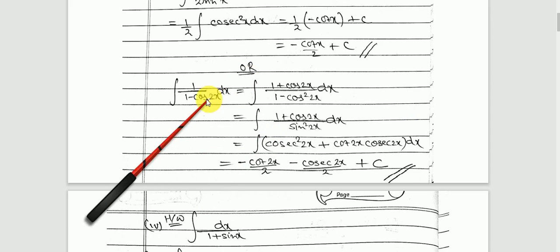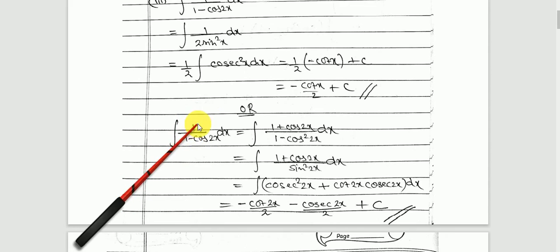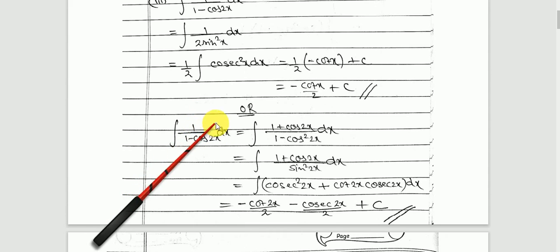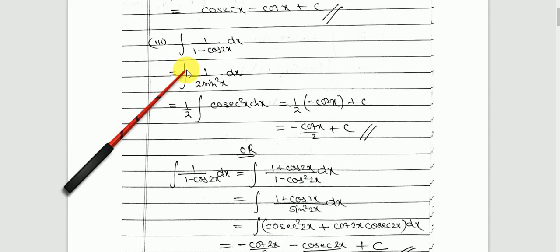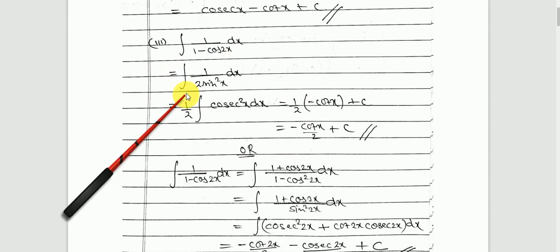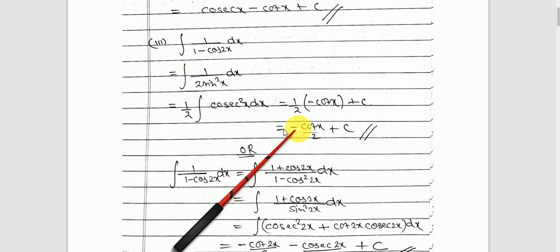This question could also be done by rationalization. Since the denominator is 1 minus cos 2x, you could multiply by 1 plus cos 2x and divide by 1 plus cos 2x. In the denominator you get 1 minus cos squared 2x, which equals sin squared 2x. Then you can write the expression as 1 upon sin squared 2x plus cos 2x upon sin squared 2x and simplify. So there is more than one way to solve a problem — whichever you find easier, proceed with that.